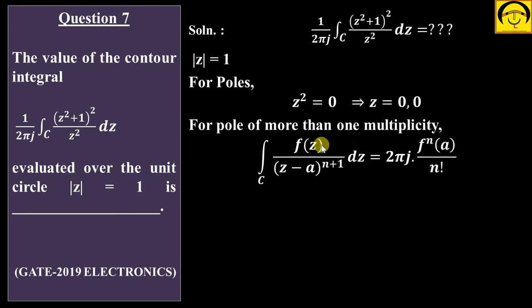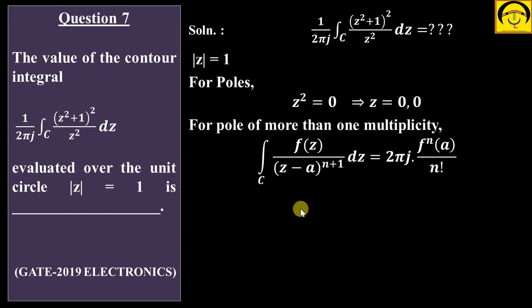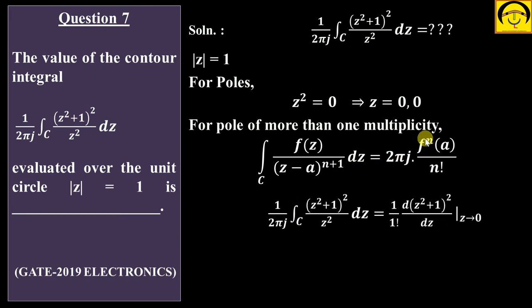Now match this integral with the formula. Since there's already (1/2πj) outside, dividing both sides by 2πj, the residue is what we need to find. Comparing denominators: n+1 = 2, so n = 1. That means we take the 1st derivative once and divide by 1 factorial. Here a = 0 and f(z) = (z² + 1)².